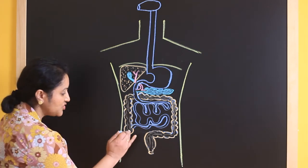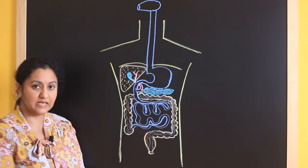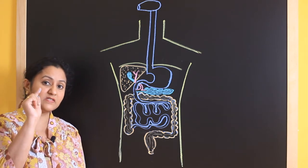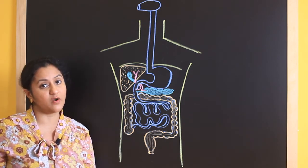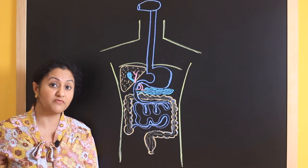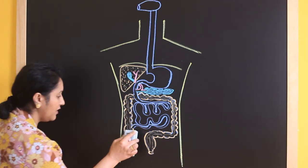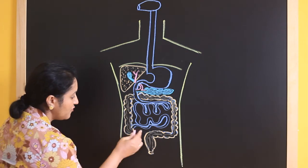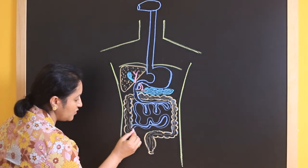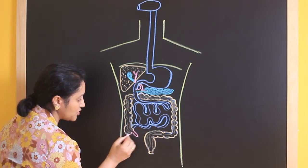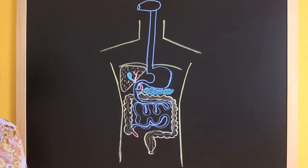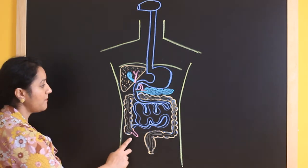Now the junction between small intestine and cecum, you will be able to see a small finger like projection which is called as vermiform appendix which is a vestigial organ. So this is a junction where small intestine meets a large intestine. You will be able to see a small finger like projection like this which is called as a vermiform appendix.